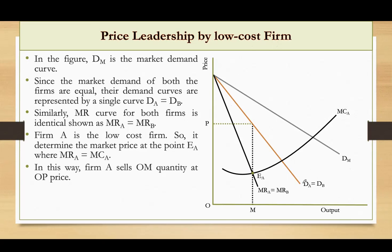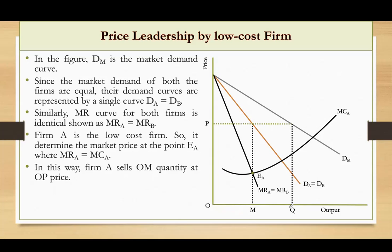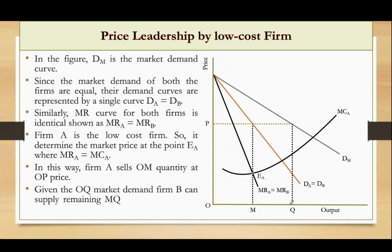The quantity OM is only half of the total market demand OQ. Given that total market demand is OQ, firm A sells only OM quantity at price OP. The remaining quantity MQ, which equals OM, can be sold by firm B.